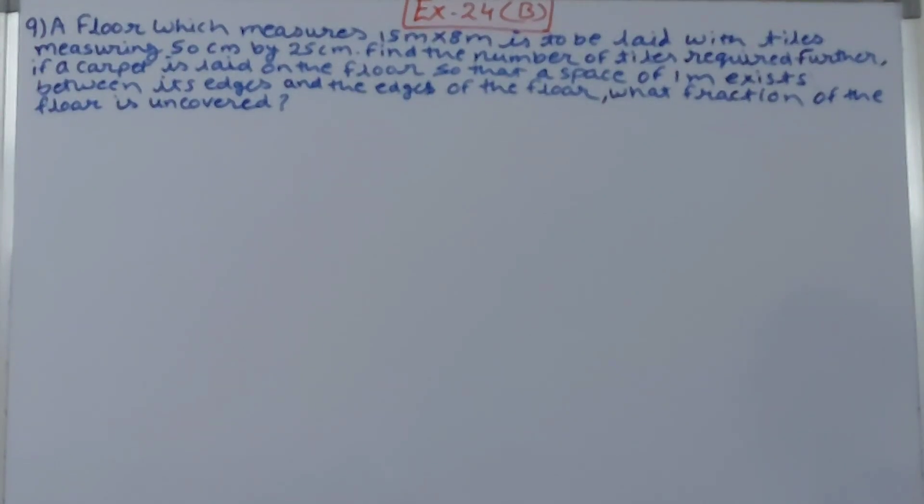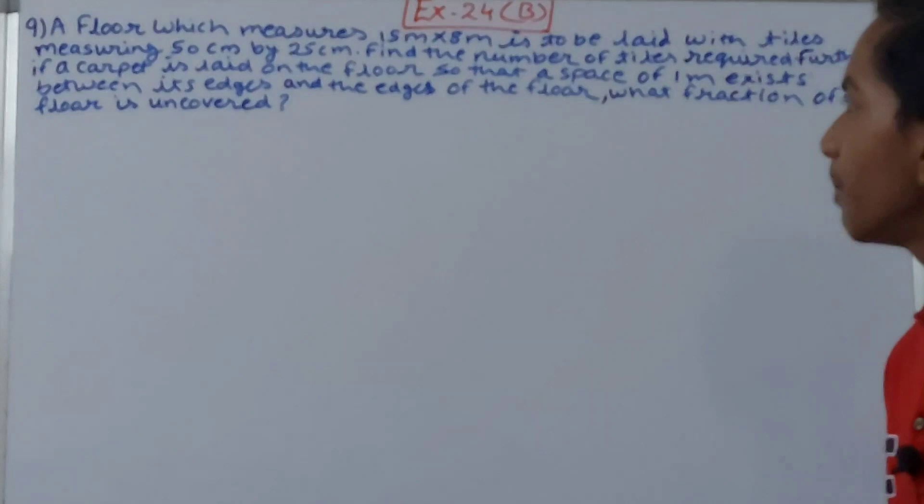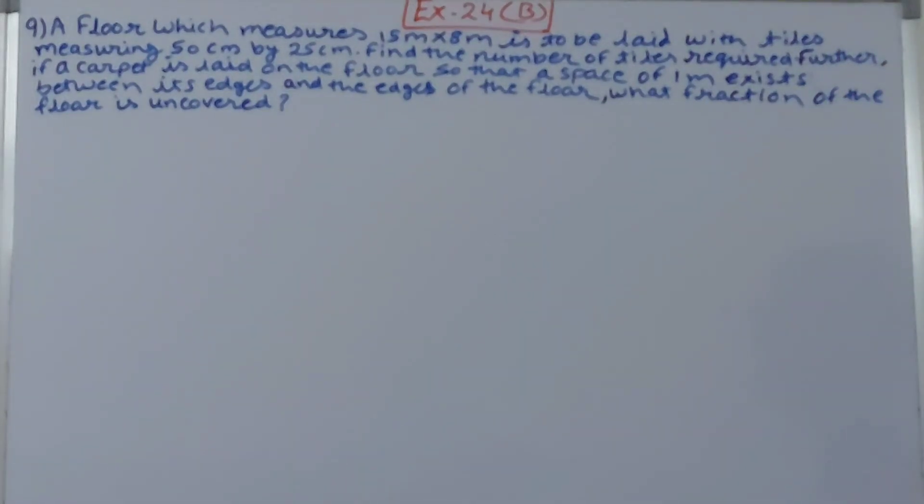Find the number of tiles required. Further, if a carpet is laid on the floor so that a space of 1 meter exists between its edges and the edges of the floor, what fraction of the floor is uncovered? So basically we have to lay tiles on a floor.